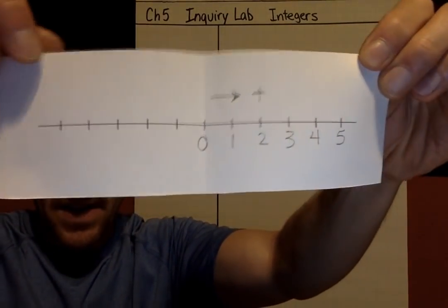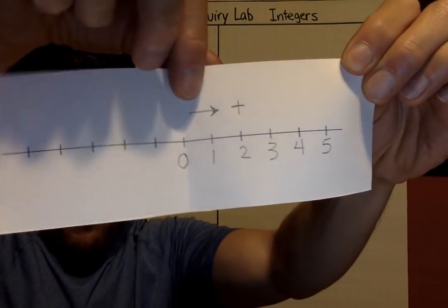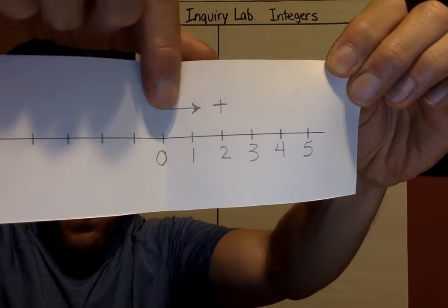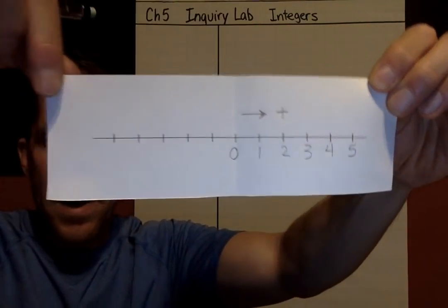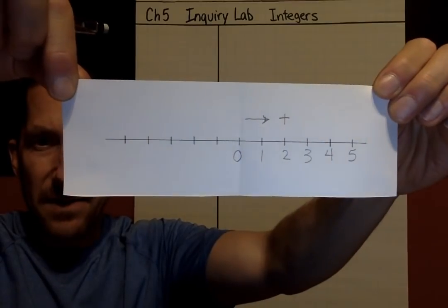If I start at zero and move to the right, I've got positive numbers.